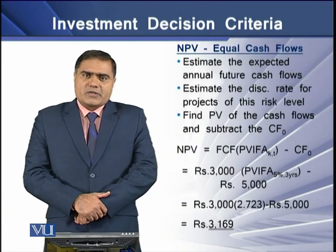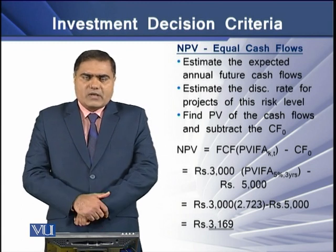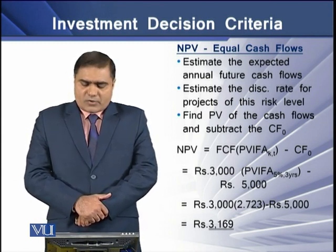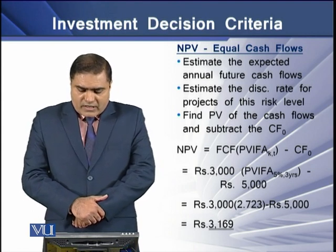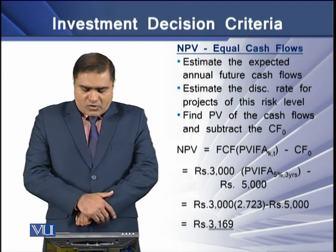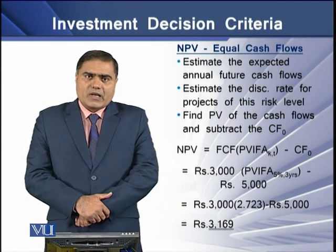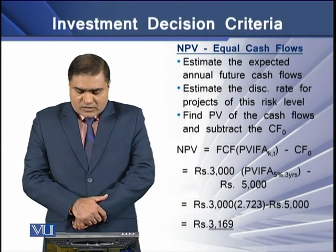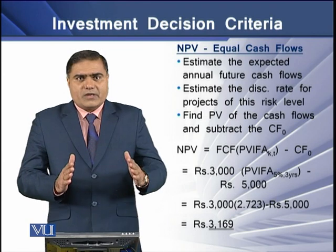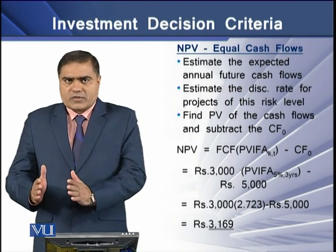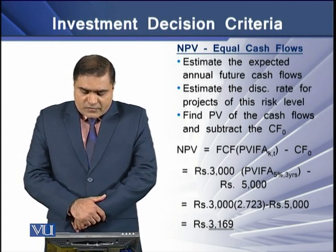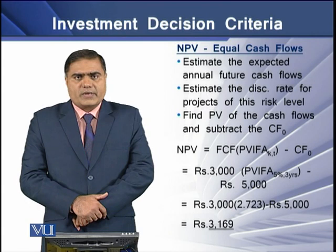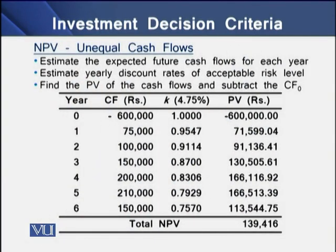To determine the net present value of a project with even cash inflows, consider an example where we have an initial cash investment of rupees 5,000 and annual cash inflows of rupees 3,000 for a period of 5 years. We determine the present value of this annuity of rupees 3,000 and deduct the present value of cash outflow, which is rupees 5,000. We see a positive figure of rupees 3,169, so this net present value is positive.